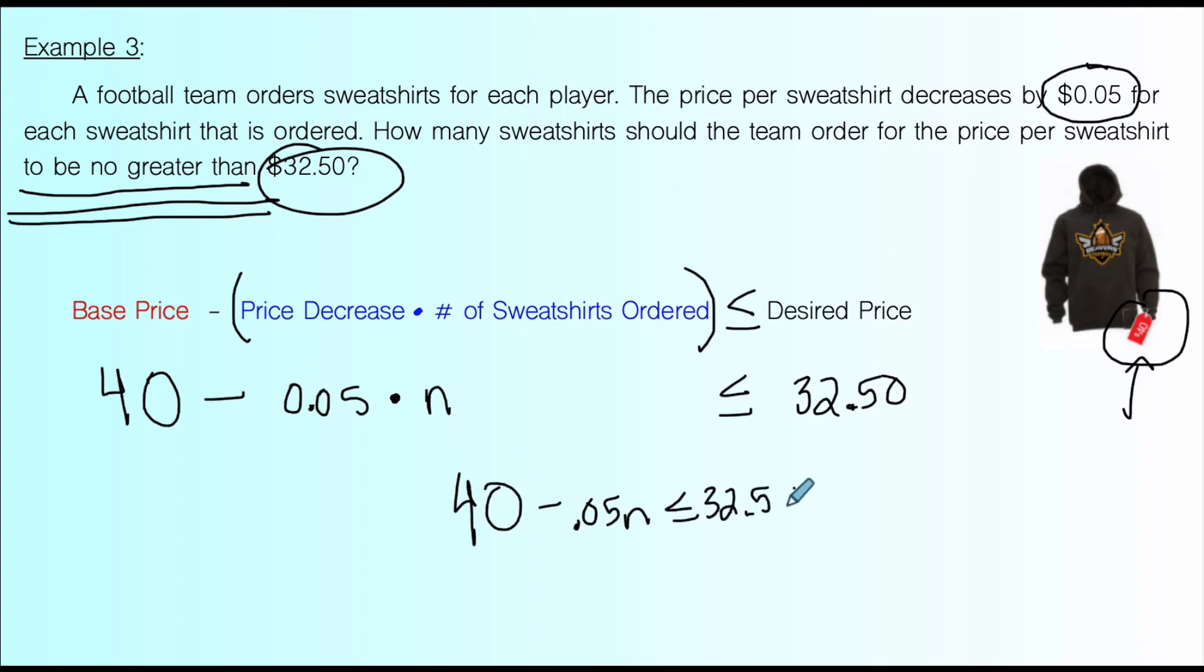And now we can solve this inequality. So to solve this, the first thing that I'm going to do is, and pay attention closely here, I'm going to subtract 40. Why? Because how do you get rid of positive 40? 40 minus 40 is 0. That gets rid of it. And then I need to subtract 40 from this side as well. And remember to line up your place values, because we're working with decimals on the right hand side. So I need to make sure things are lined up. And now what's left over is minus 0.5N. So negative 0.05N is less than or equal to. And then when you subtract $32.50 minus 40, that's going to leave you with a negative. So negative 7.50.